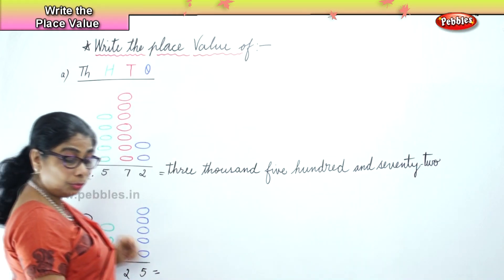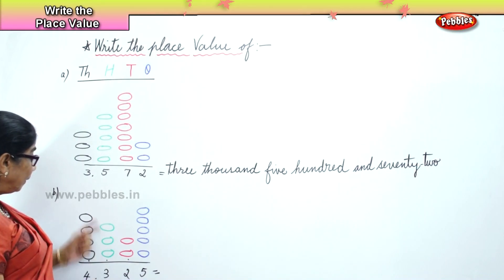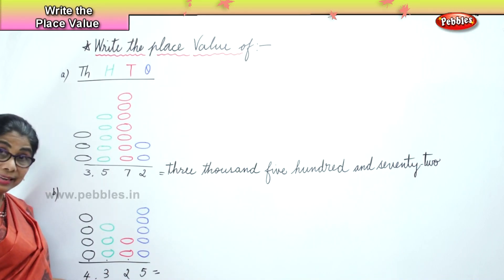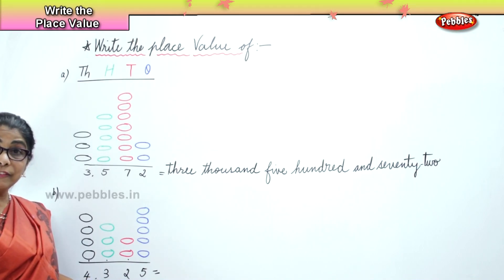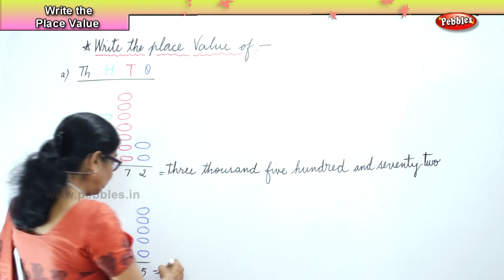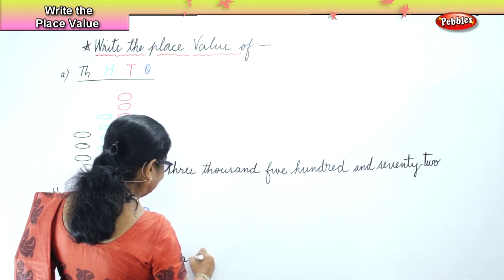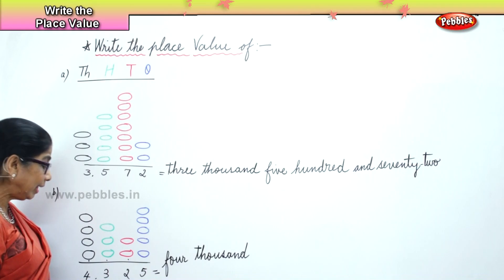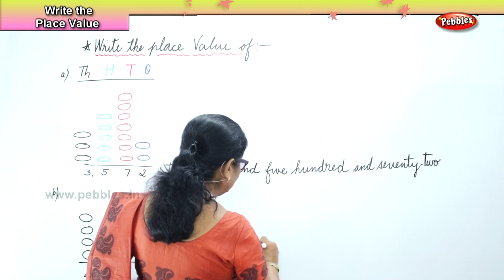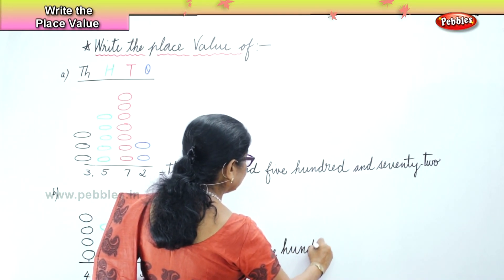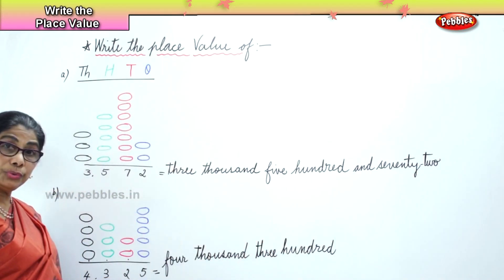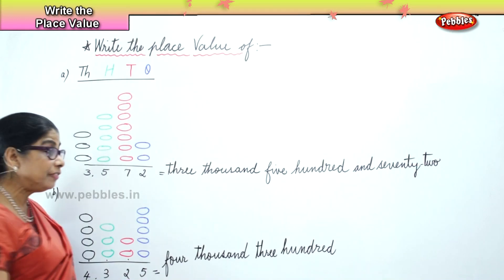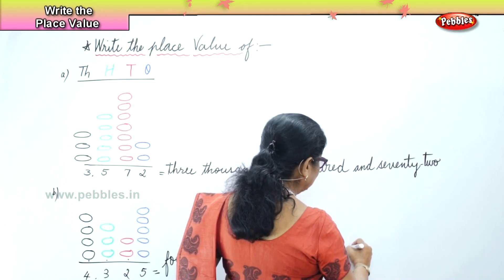Now what are we going to do? We need to write down the name. You know the place value of four, place value of three, place value of two, place value of five. Place value of four is four thousand, three is three hundred, two is two tens, and five is one. So write the spelling: four thousand, three hundred, and twenty-five.